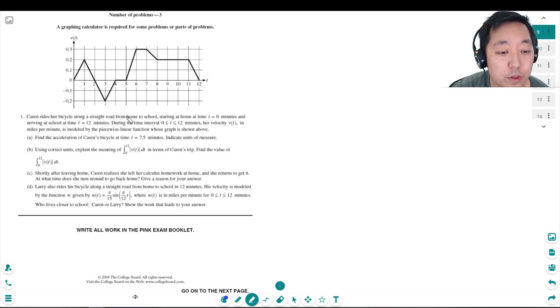Karen rides her bicycle along a straight road from home to school starting at home at time t equals 0 minutes and arriving at school t equals 12 minutes. During the time interval her velocity in miles per minute is modeled by the piecewise linear function whose graph is shown above.